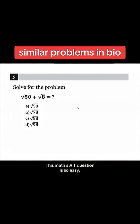This math SAT question is so easy everybody gets it wrong. So we have √50 + √8. Well, that would just be √58, right? Wrong. You can't add two terms that are different in their square roots.